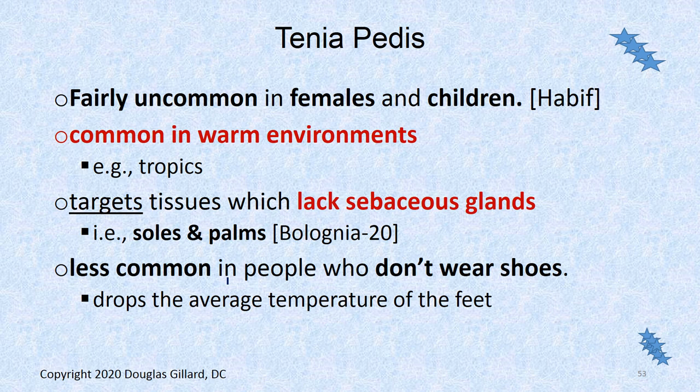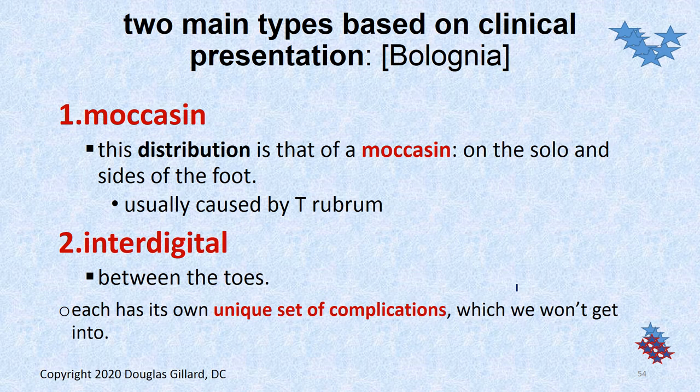Tinea pedis is fairly uncommon in females and children, very common in warm environments like the tropics. It likes tissue without sebaceous glands — so it can't be washed away by sebum — like the soles and the palms of your feet. It's less common in people who don't wear shoes, because if you don't wear shoes you're not going to have a nice hot environment for it to grow. There are two types: the moccasin and the interdigital distribution. The moccasin literally looks like a moccasin, caused by T. rubrum. Interdigital is in between the toes. Sometimes you can have one and not the other, but it's common to have both at the same time.